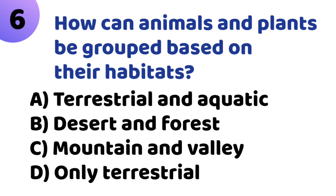Sixth question: How can animals and plants be grouped based on their habitat? Option A: Terrestrial and Aquatic. Option B: Desert and Forest. Option C: Mountain and Valley. Option D: Only Terrestrial. The correct answer is Option A, Terrestrial and Aquatic.